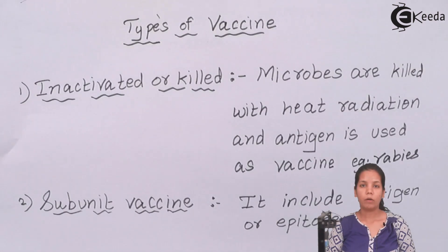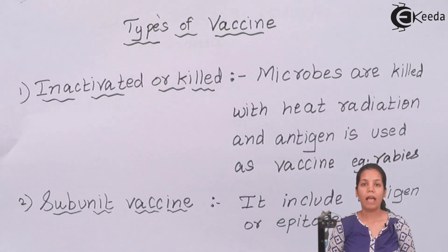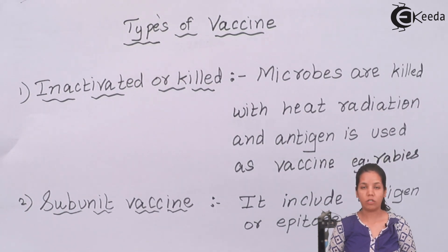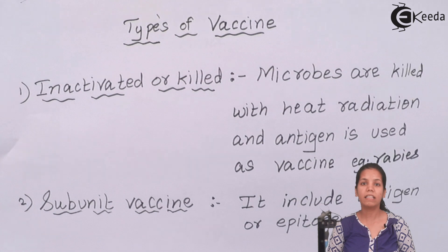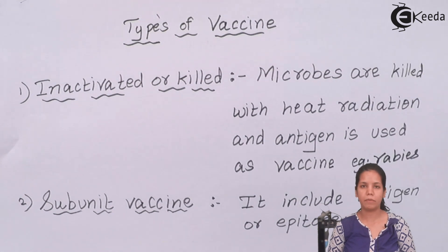In the earlier part, we have studied how vaccines are made, what the different kinds of vaccines are, what antigens are, how vaccines are isolated, and what are the examples of different kinds of vaccines. So let us now see the different kinds of vaccines with their examples.